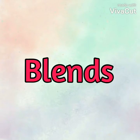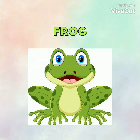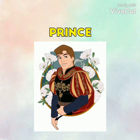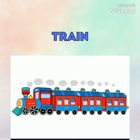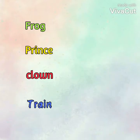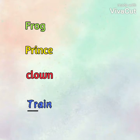Today we are going to learn about blends. Let us look at the following words: frog, prince, clown, train. In these words we see two consonants blend together and help the word begin. Let us take F-R from frog, P-R from prince, C-L from clown, T-R from train.